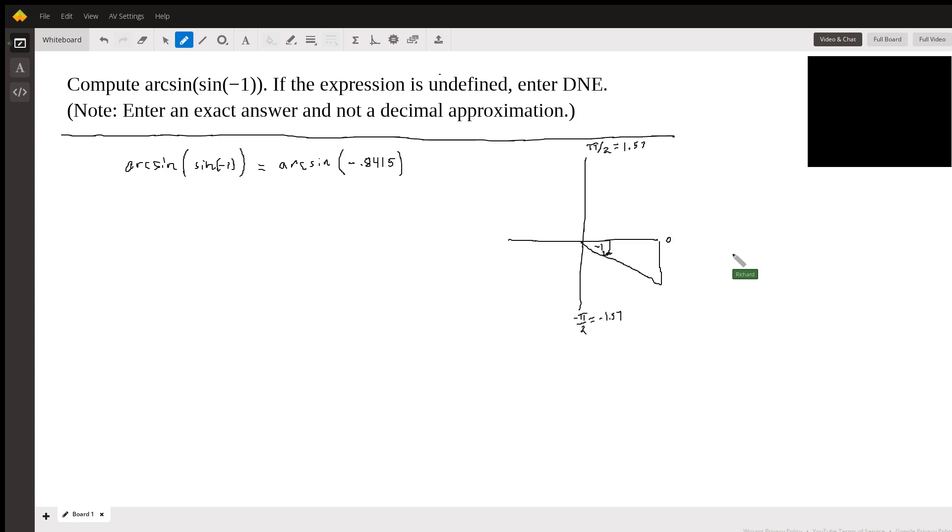So if we think of the arc sine of x, that domain here, the domain for this is negative pi over two to pi over two.